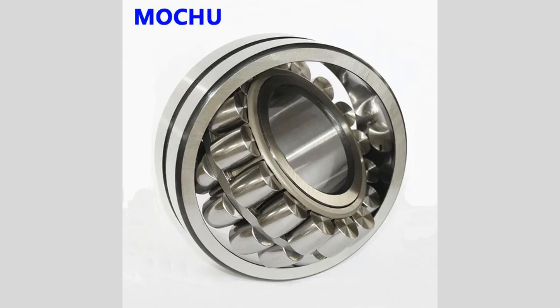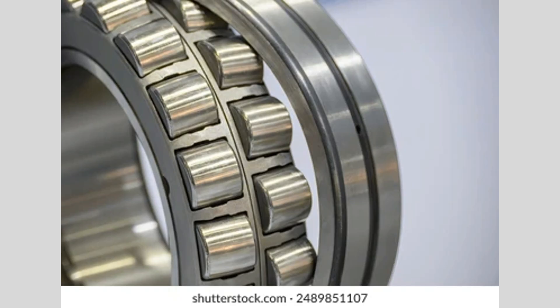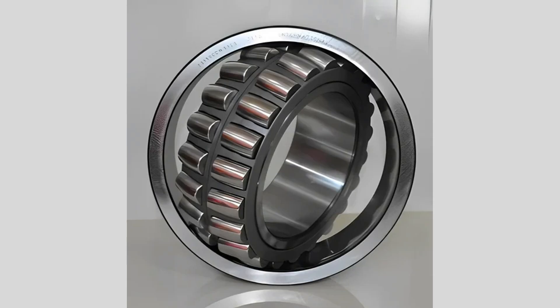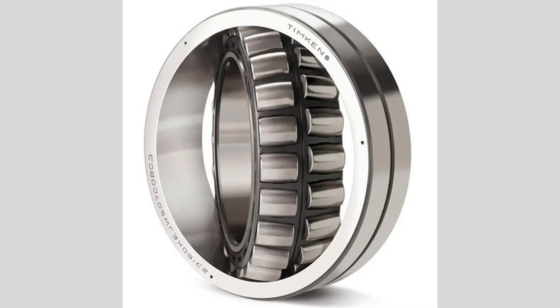Spherical roller bearings are designed to accommodate both radial and axial loads in applications where misalignment may occur. They consist of an outer ring with a spherical raceway, an inner ring, and a set of barrel-shaped rollers that can pivot within the outer ring. This unique design allows the rollers to adjust to misalignment, making these bearings particularly effective in situations where shaft deflection or misalignment is a concern. The spherical shape of the outer raceway permits the rollers to move freely, which reduces stress on the bearing components and enhances durability.